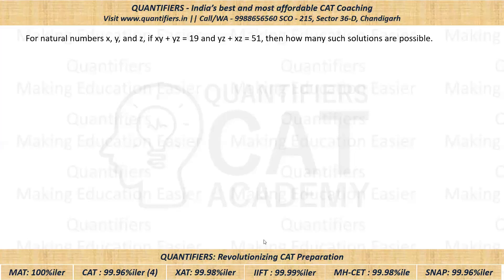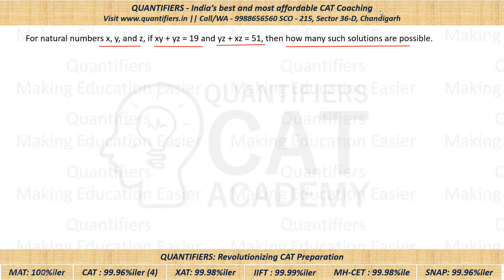Okay students, I hope you have tried it. Let's look at what is given in the question. x, y, and z are natural numbers. First equation given is xy plus yz equals 19. Another equation is yz plus xz equals 51. We have to tell how many such solutions are possible.